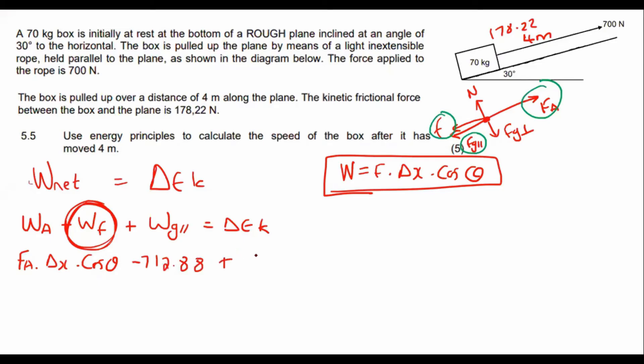OK, and then for gravity parallel, you would have to use FG parallel delta X times cos theta. And then EK is going to be half MV squared final minus half MV squared initial. Now, do you guys remember FG parallel? FG parallel is always equal to MG sin theta.